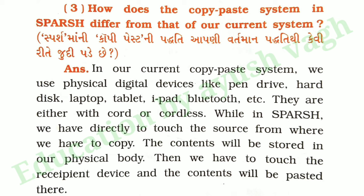Question 3: How does the copy-paste system in a purse differ from that of our current system? Answer: In our current copy-paste system, we use physical digital devices like pen drive, hard disk, laptop, tablet, iPad, Bluetooth, etc. They are either wired or cordless. While in a purse, we have to directly touch the source from where we have to copy. The contents will be stored in our physical body. Then we have to touch the receptor device and the contents will be placed there.